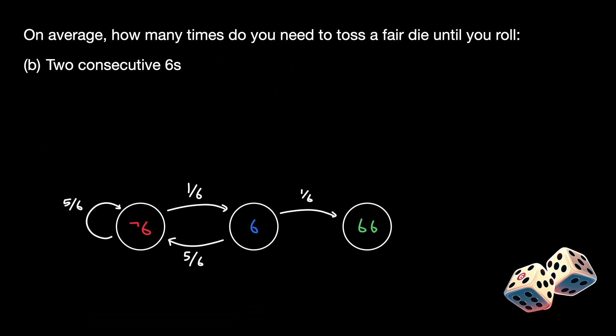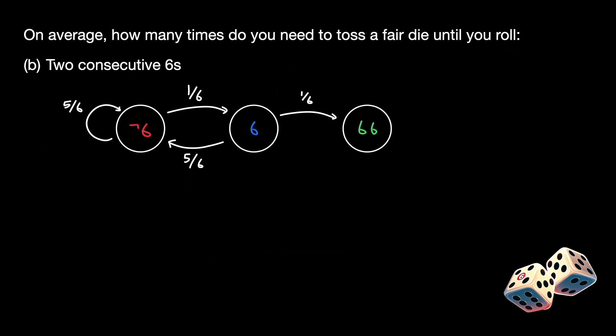Using this transition diagram, let's now solve for the expected number of tosses to get two consecutive sixes. Let's denote the number of tosses we need to get from NOT-6 to consecutive sixes as E1 and the number of tosses to get from a SINGLE-6 to consecutive sixes as E2. Now, similar to part A, we can solve for both E1 and E2. In E1, we know that there is a 1/6 chance that we move on to the state where E2 is the number of tosses to get to double sixes. Further, we know that there is a 5/6 chance that we remain in E1. Similarly, we can write out the expression for E2.